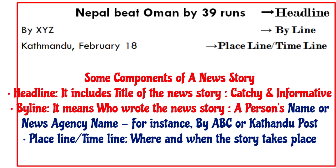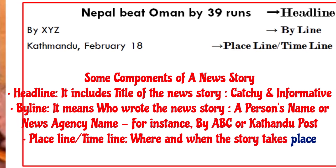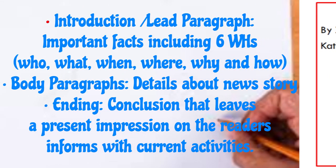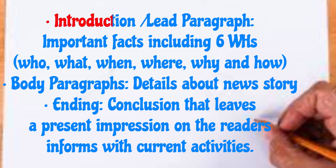The second component is the Byline, where the name of the news writer or news agency is written — for example, ABC or Kathmandu Post. The third component is the Place line and Timeline, which means the place and time where and when the story takes place.